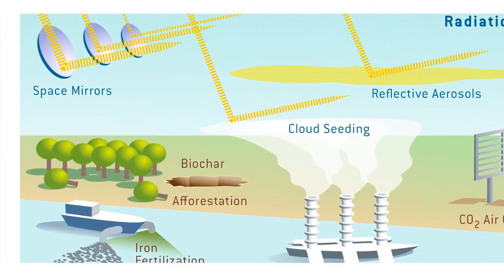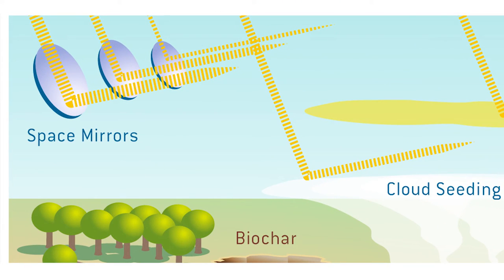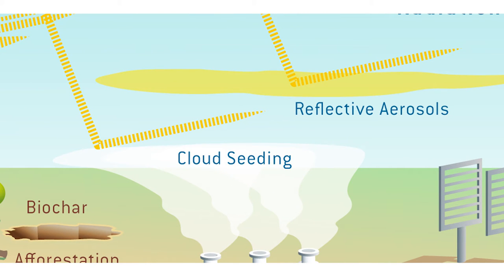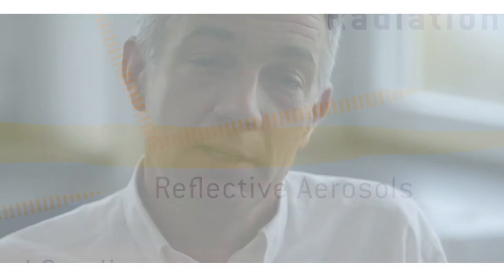Some ideas regard space mirrors that would reflect part of the incoming solar radiation back into space before it hits the planet and could warm it. Other ideas are centered around modifying the color of the planet — seeding clouds, making clouds brighter and whiter. Also some ideas involve putting reflective aerosols into the atmosphere. We know this from volcanic eruptions that put a lot of aerosols into the high atmosphere, which leads to some cooling for a few years until these aerosols settle out. Whiter planets reflect energy and therefore tend to further cool the planet, and there are feedbacks in the climate system that some people think one could engineer.